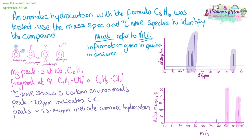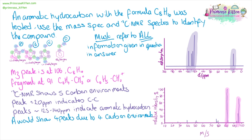We're going to go to our original drawings and work out which of these compounds has five different carbon environments. In 1,2-dimethylbenzene, each of the methyl groups is in the same environment, and moving symmetrically around the benzene ring, we can see that this one has four carbon environments. Looking at all of the rest in exactly the same way, we can see that 1,3-dimethylbenzene is the only one that will produce five different peaks — five different carbon environments — on a carbon NMR spectrum.